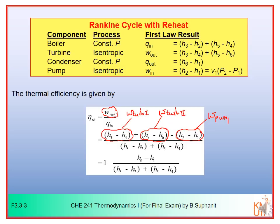Q_in will also be different. Q_in has the heat through the main boiler, which is H3 minus H2 — this is Q_boiler — and you also have Q_reheat, which is H5 minus H4. So you have more terms than in the simple Rankine cycle calculation, including more turbine stages and Q_reheat. Be very careful when calculating the thermal efficiency of the reheating cycle.